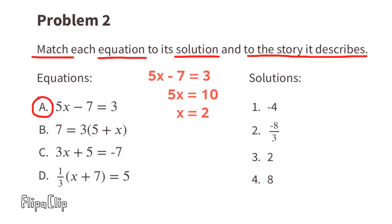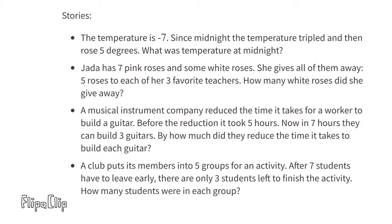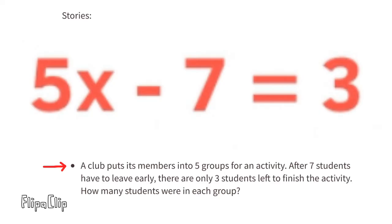Since x equals 2, the solution for equation a is the third solution. The story described by equation a is the club activity story: it puts members into 5 groups after 7 students left — that's the minus 7. There are only 3 students left to finish the activity — that's the equals 3. The x represents how many students were in each group. The 5x represents 5 groups of 2 students, or 10 students; when 7 students leave, that's 10 minus 7, or 3.